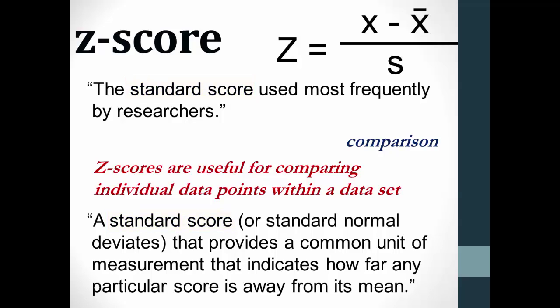In essence, when you convert a particular score to a z-score, you are standardizing the scores. One of the benefits of standardizing scores is that you can compare two scores that are from different normal distributions.